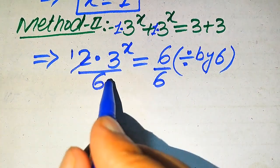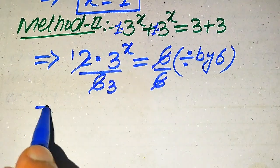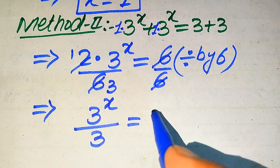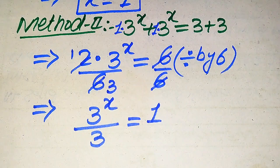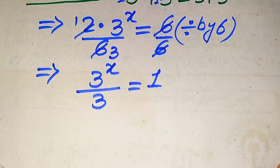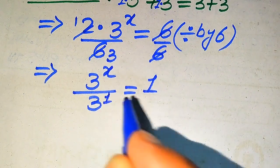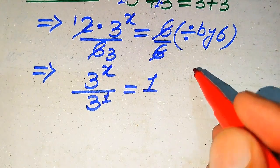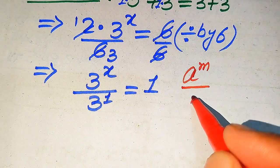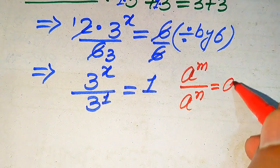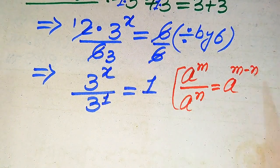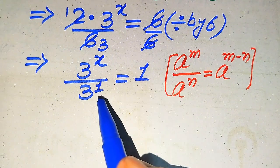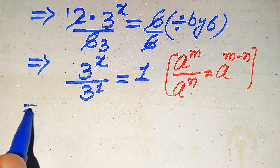When you divide by 6: 2 ones are 2, 2 threes are 6, this 6 cancels out by this 6, and we get 3 to the power of x divided by 3 equals 1. Further in the next step, the exponent in the denominator term is 1, so we use the exponential law: a to the power of m divided by a to the power of n equals a to the power of m minus n.